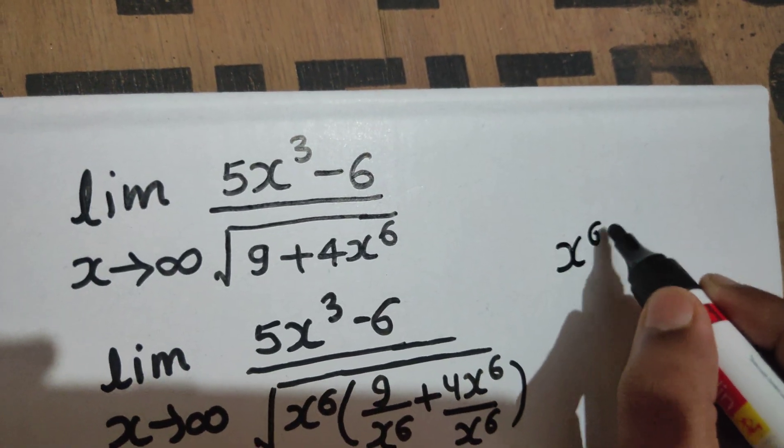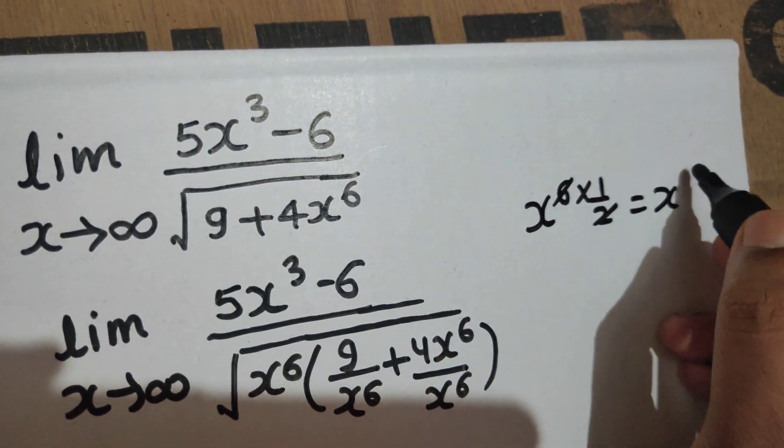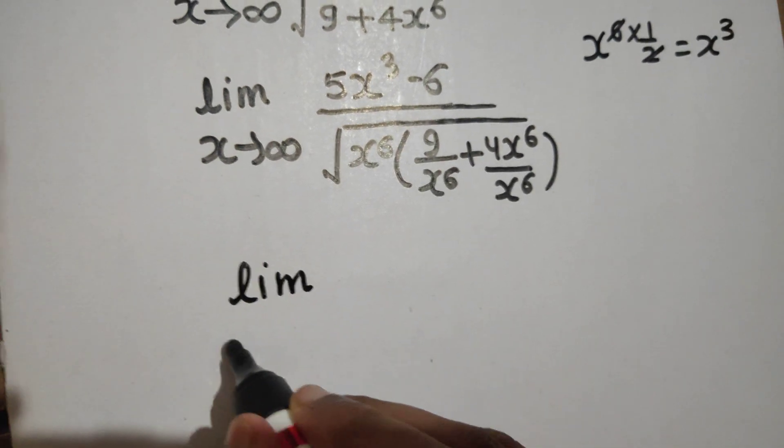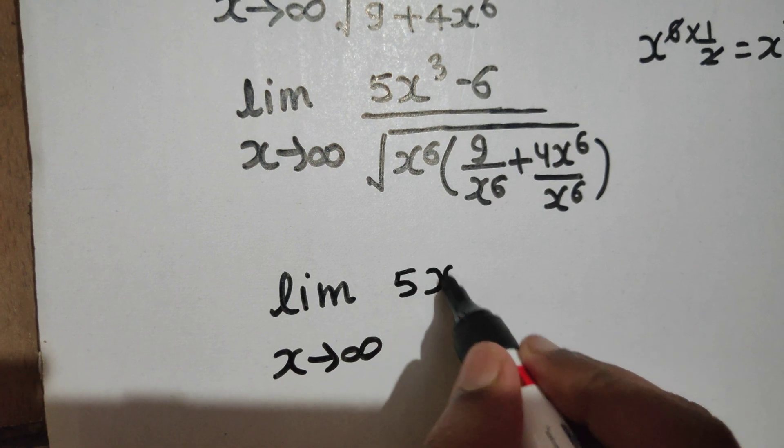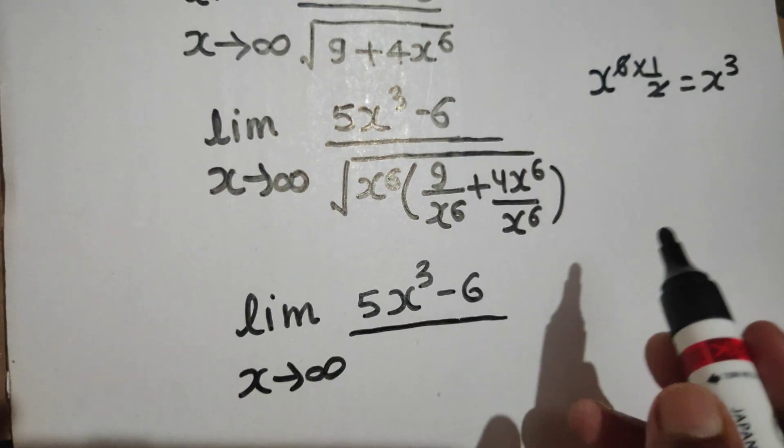So limit x tending to infinity: 5x³ - 6 divided by - now this is x³ - and I have √(9/x⁶ + 4).